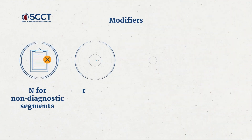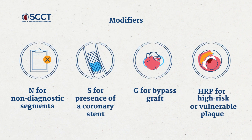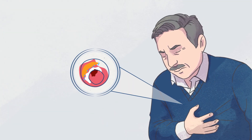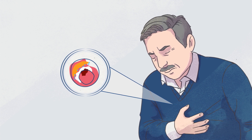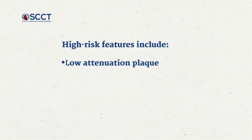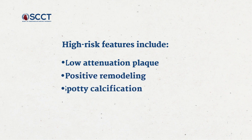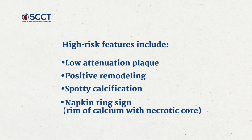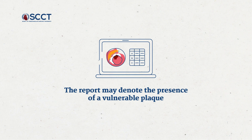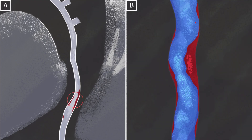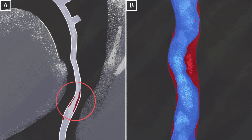There are modifiers to CADRADs: N for patients with non-diagnostic segments, S for the presence of a coronary stent, G for a bypass graft, and V for high-risk or vulnerable plaque. If a coronary plaque has two or more high-risk features, this could predict a risk of myocardial infarction. These high-risk features include low attenuation plaque by CT Hounsfield units, positive remodeling, spotty calcification, or the napkin ring sign, which is a rim of calcium with a necrotic core. The report may denote the presence of a vulnerable plaque. This example shows positive remodeling with low attenuation plaque shown in red.